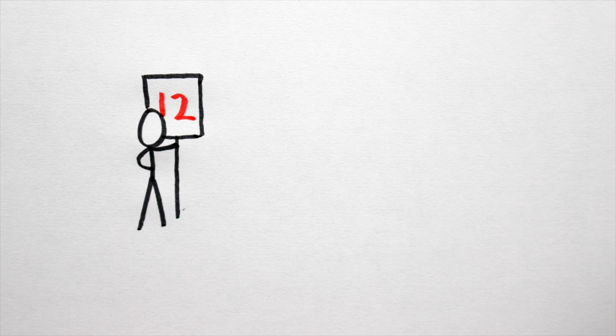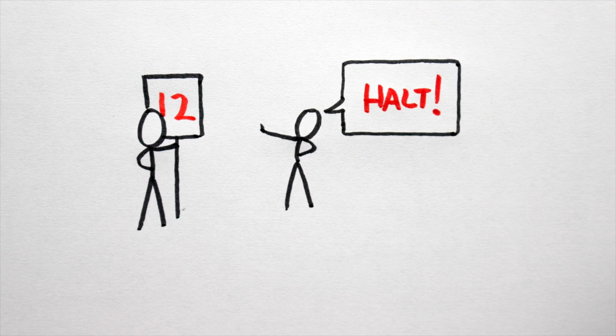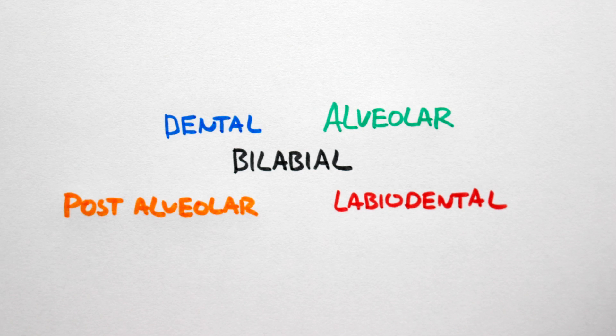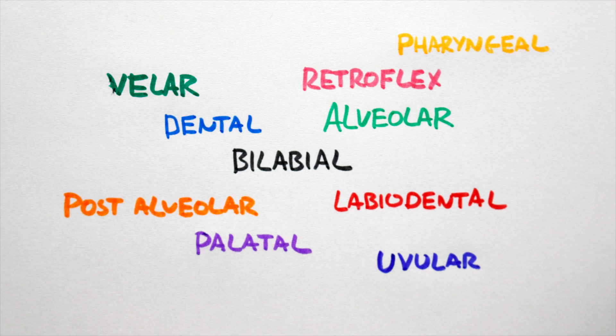There's about 12-ish places in the mouth where the articulators can be brought together to form an obstruction. They are bilabial, labiodental, dental, alveolar, post-alveolar, retroflex, palatal, velar, uvular, pharyngeal, epiglottal, and glottal. Let's break it down.